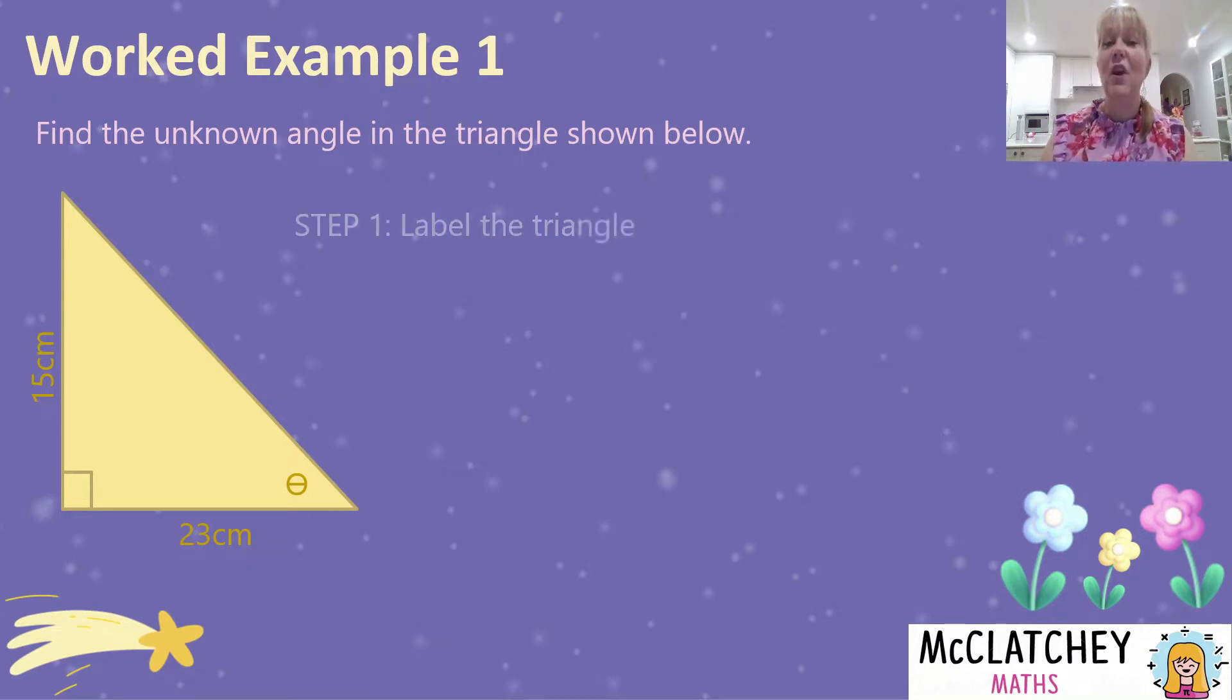So firstly, we're going to label that triangle. So we know our hypotenuse. It's the side opposite the 90 degree right angle. And our opposite side is always in reference to the angle we're given or the angle we're trying to find. So that means our 15 centimeter side is the opposite side, which leaves our leftover adjacent sitting next door at 23 centimeters.